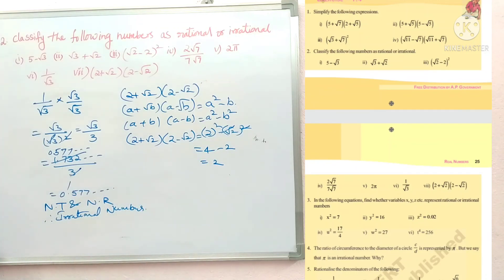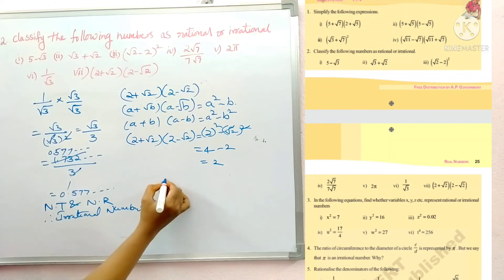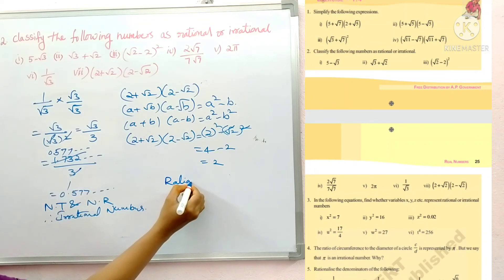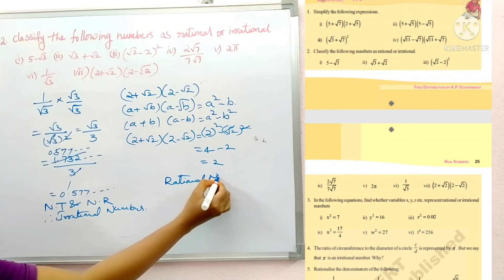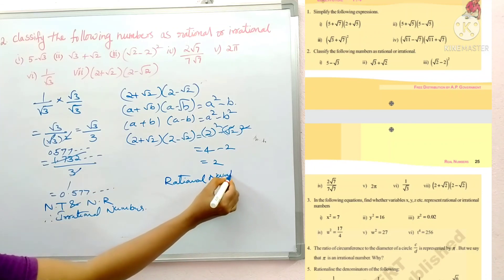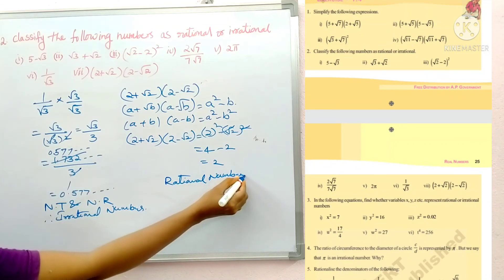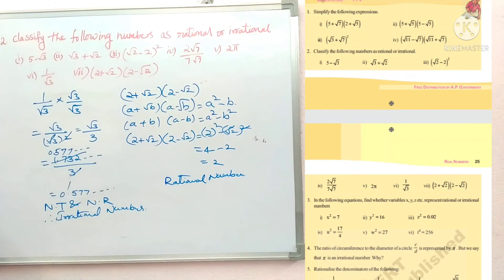The result is 2, which is clearly a rational number. So (2 plus root 2)(2 minus root 2) is a rational number. In this way we can solve problems asking whether given numbers are rational or irrational.